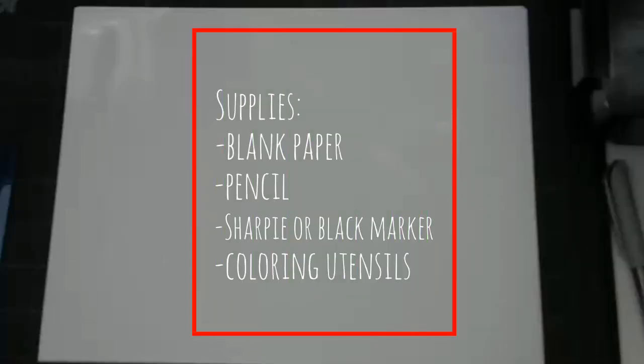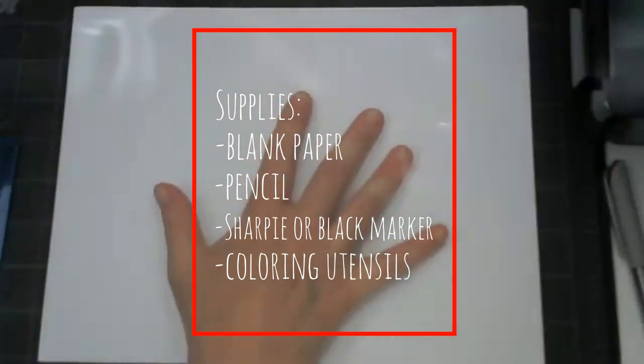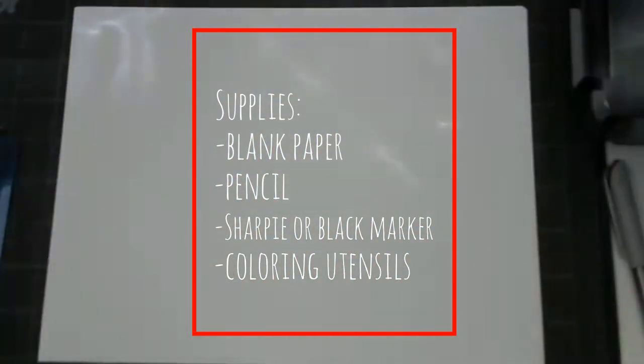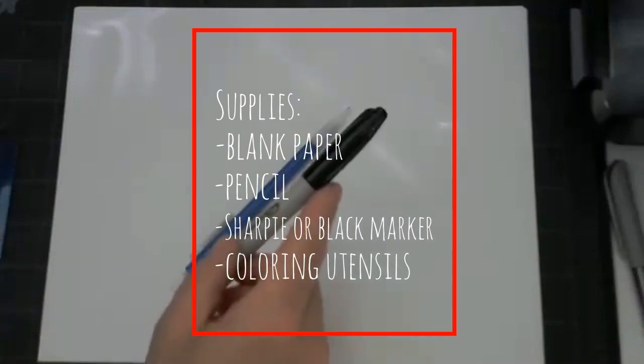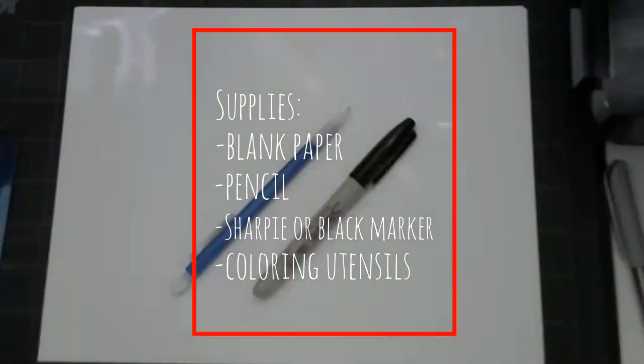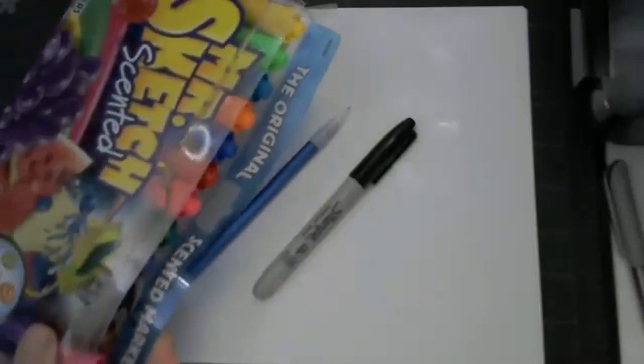Supplies you're going to need for today's sombrero art are blank paper in a horizontal or landscape fashion. You could use a pencil, but I'm going to skip straight to the Sharpie, and then some sort of coloring utensils, colored pencils, crayons. I'm going to use markers today.